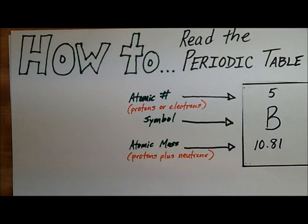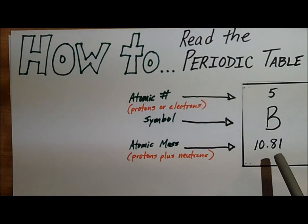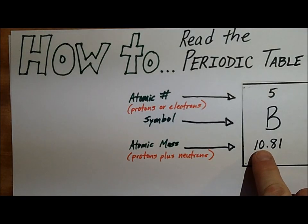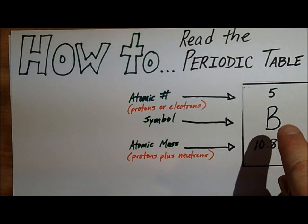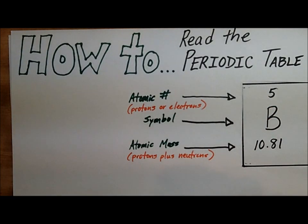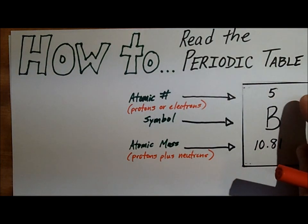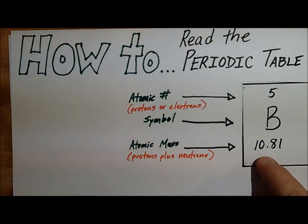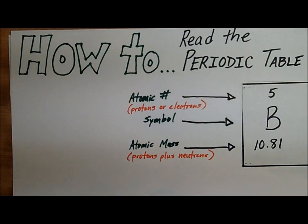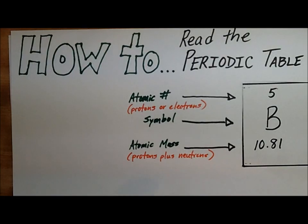To find the number of neutrons, what you can do is round the atomic mass to a whole number — in this case up to 11. Then subtract out the protons: 11 minus 5 gives you 6. So that tells you the number of neutrons — you have 6 neutrons for this atom.